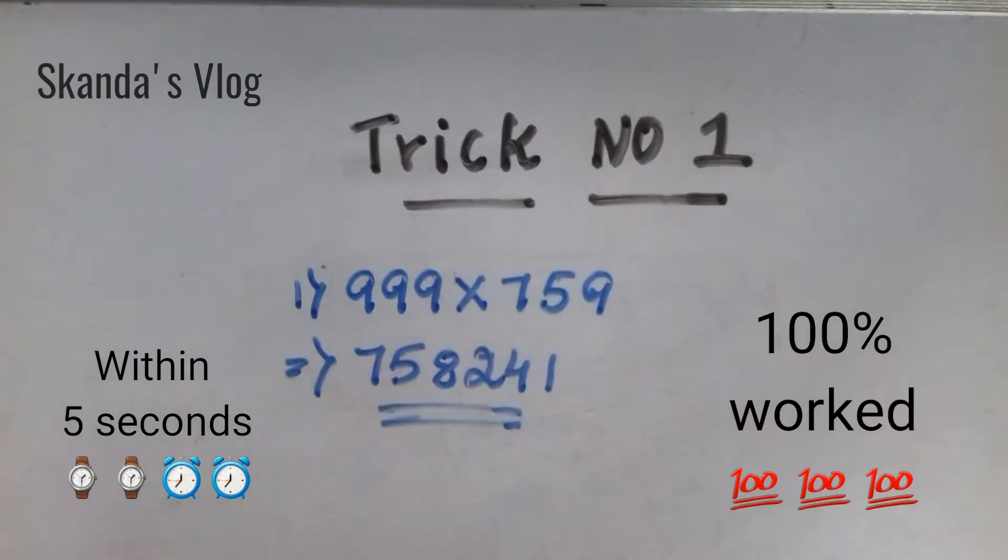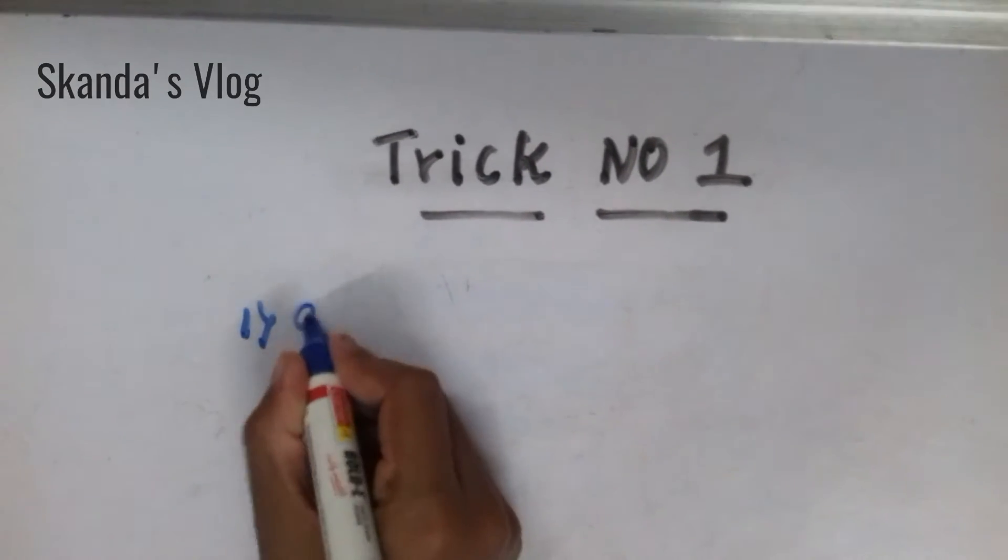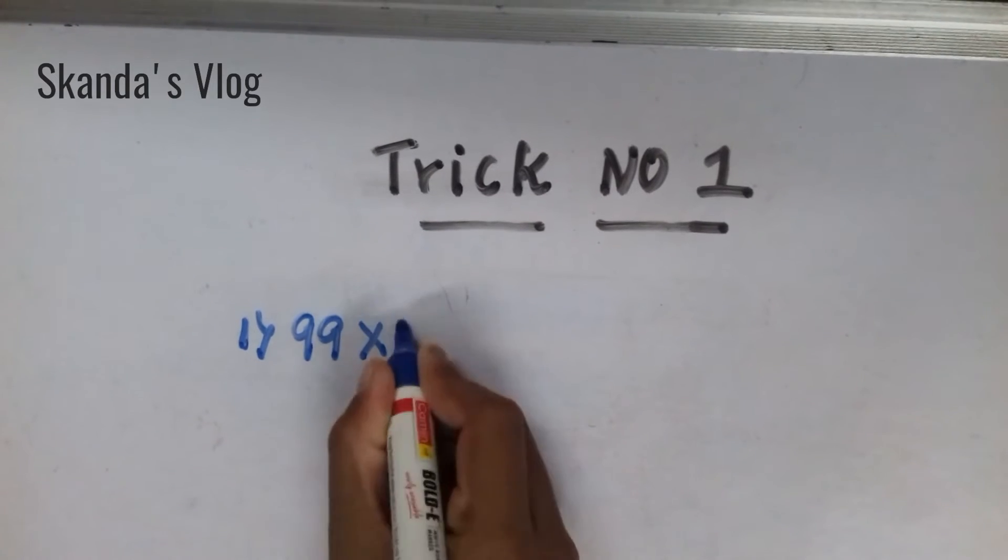So, let's learn. Now, 2 digits. 99 into 43.